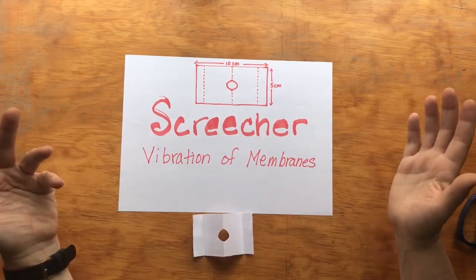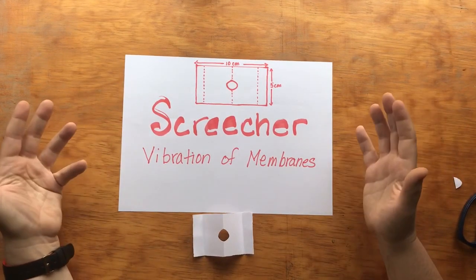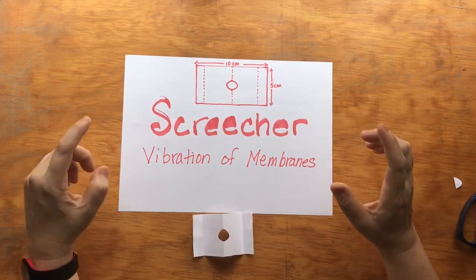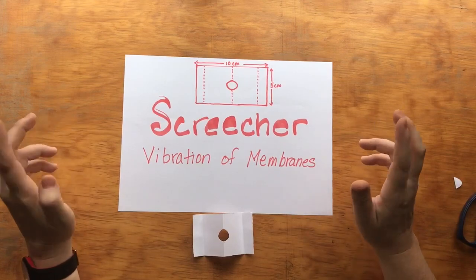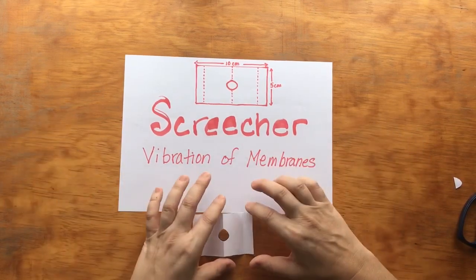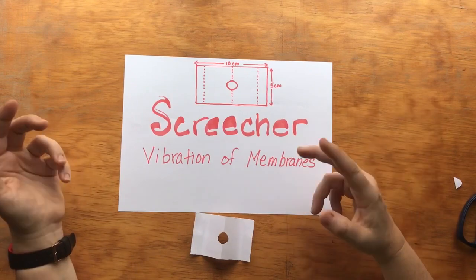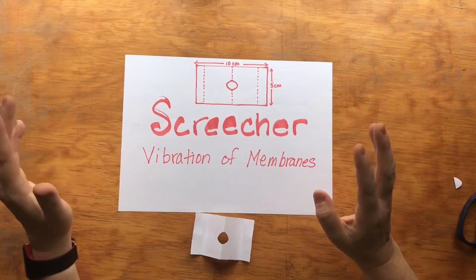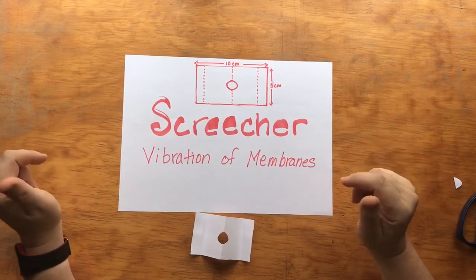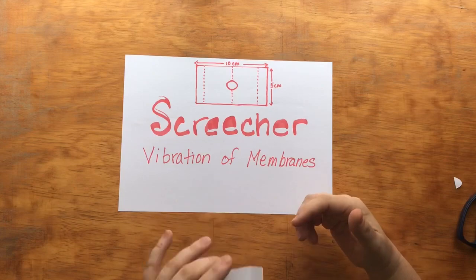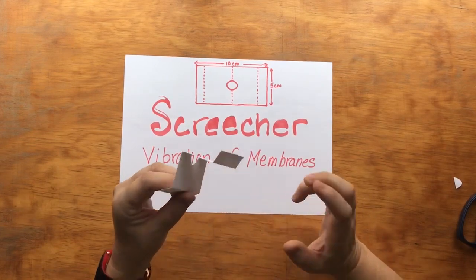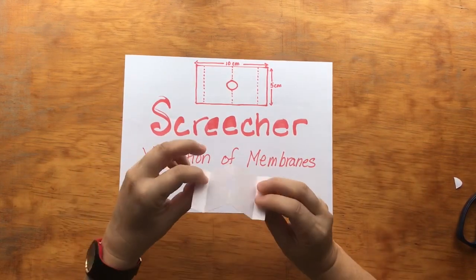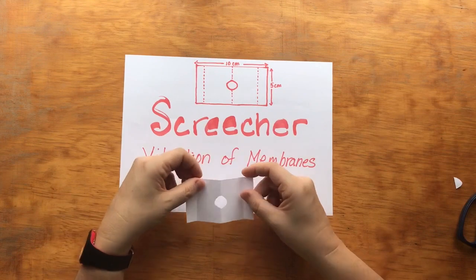This is really simple — it gets the idea across of how vocal cords work and the fact that sound is created through the vibration of membranes. There are a number of other activities you can do: you can make music boxes to talk about vibration of membranes, or bring in drums. But this is great if you're in an area where there aren't many resources — surely there's scrap paper, and you can just take that and do this. It's really effective and fun for the students.